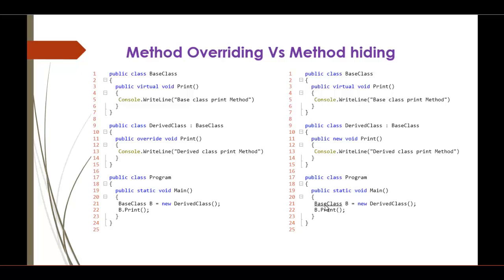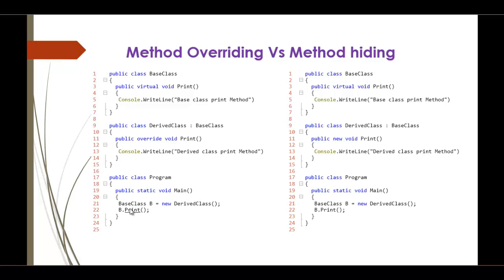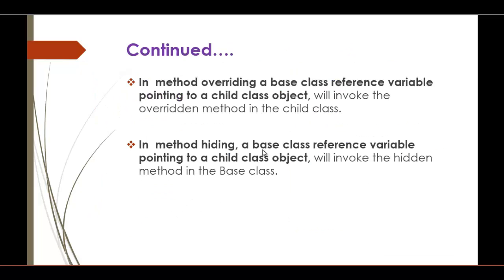We will jump into the presentation. When I call b.print with method overriding, it calls the overridden method — the derived class print method. When I call b.print with method hiding, it invokes the hidden method in the base class. Here you can see the complete definitions: in method overriding, a base class reference variable pointing to a child class object invokes the overridden method in the child class. In method hiding, it invokes the hidden method in the base class.